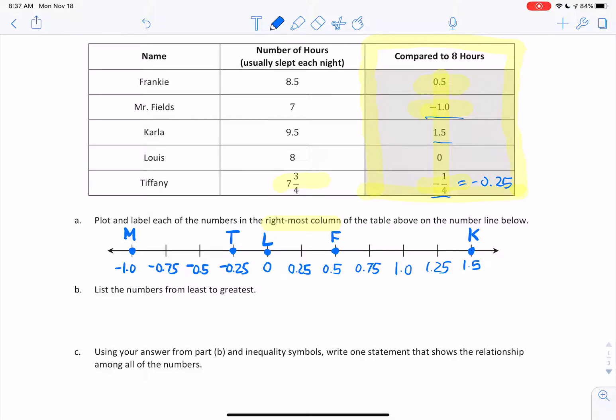Question B: list the numbers from least to greatest. Wonderful. I already have these on the number line, so I just have to start on the left. Starting with negative 1.0, going to Tiffany. I want to represent it as a fraction because that's the way it was originally provided to me. If I put negative 0.25, that's technically not wrong, but I just want to remain consistent with the math problem. Then 0, 0.5, and 1.5. Numbers are listed from least to greatest.